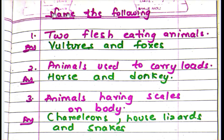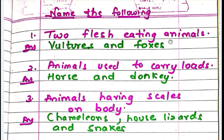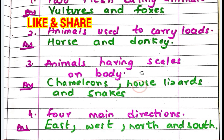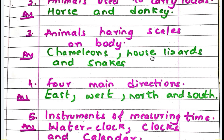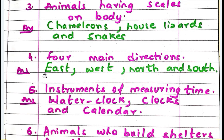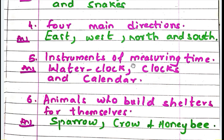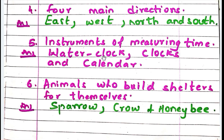Let's start with name the following. Number one: two flesh-eating animals — answer: vultures and foxes. Number two: animals used to carry loads — answer: horse and donkey. Number three: animals having scales on their body — answer: chameleons, lizards and snakes. Number four: four main directions — answer: east, west, north and south. Number five: instruments for measuring time — answer: water clock, clocks and calendar.